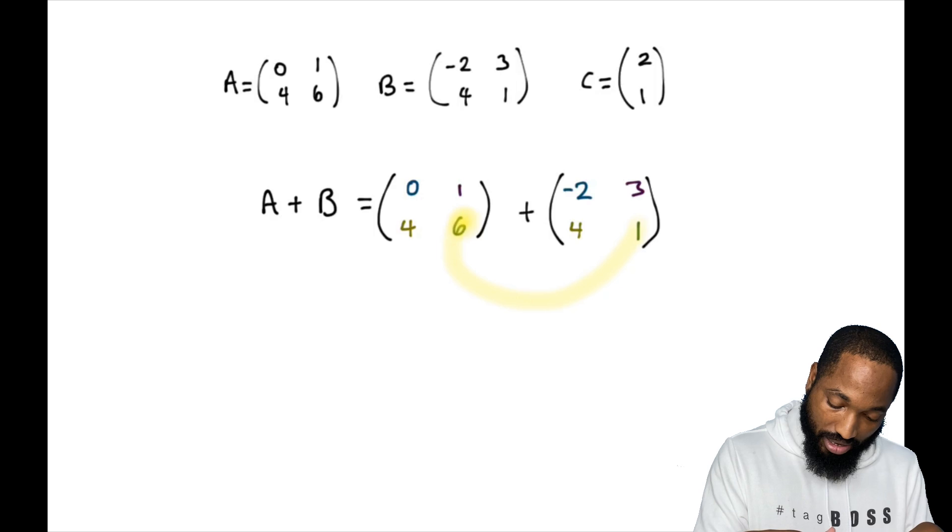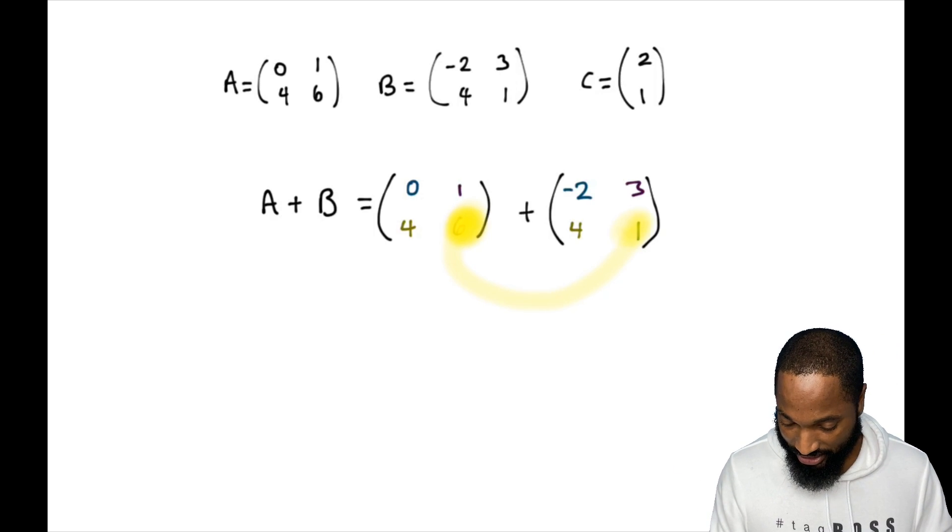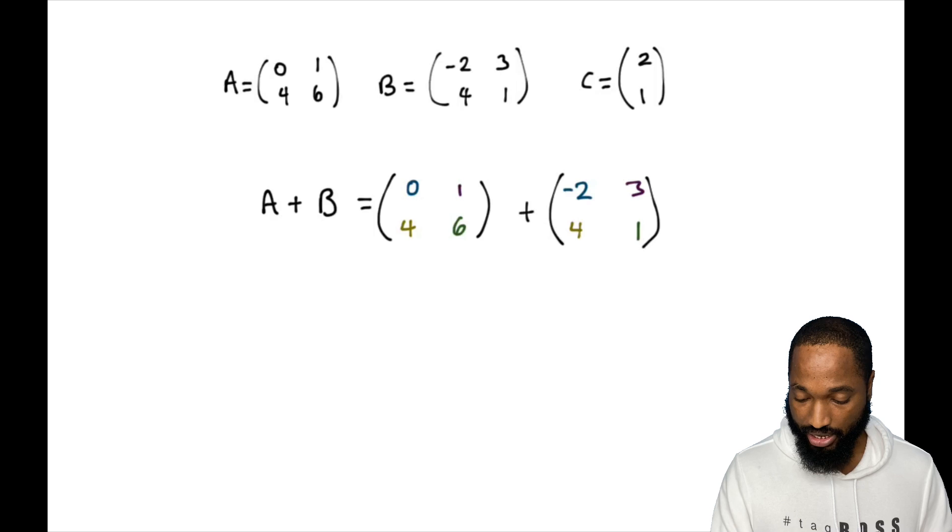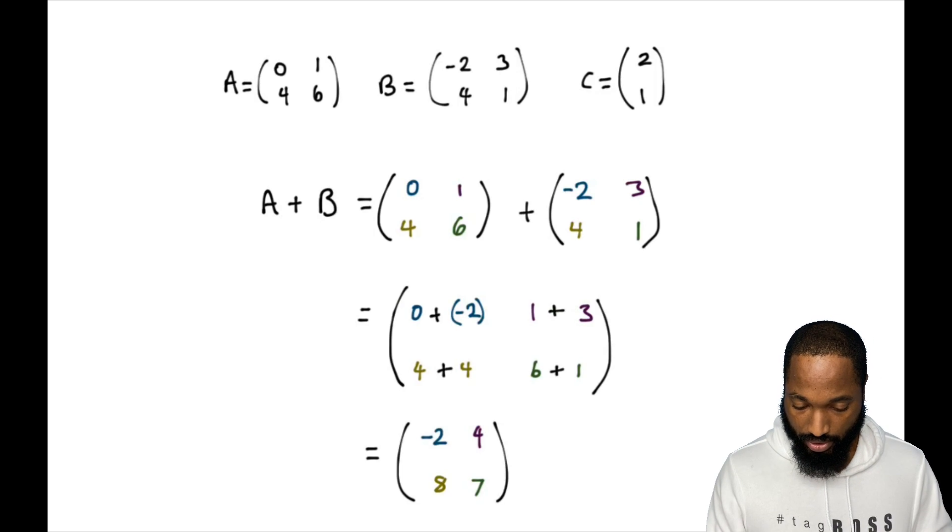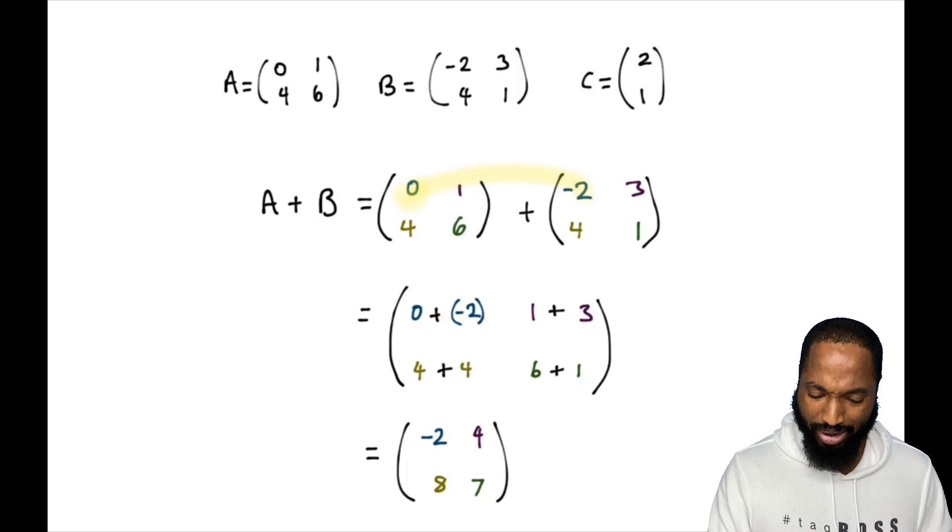So this six will get added to this one because they're in the same situation - the same row and column, right? This is in the second row, second column; this is in the second row, second column. You catch the idea. So let's add them together and see what happens. Zero and negative two gives negative two. One and three is four.